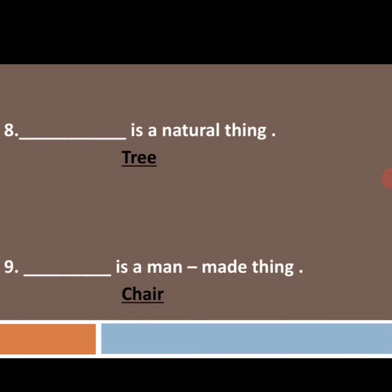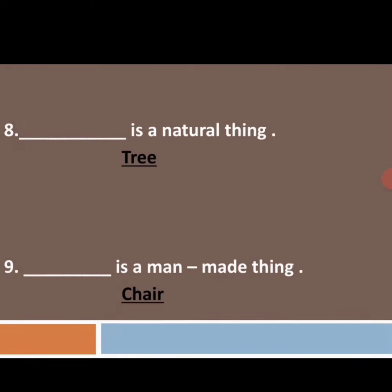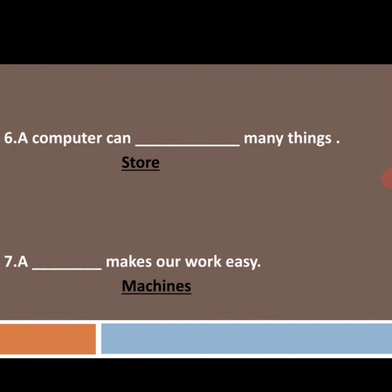In the ninth one: ___ is a man-made thing. A chair is a man-made thing — make the tick mark for chair. Next, a mixer runs on ___. A mixer runs on electricity — make the tick mark for electricity.